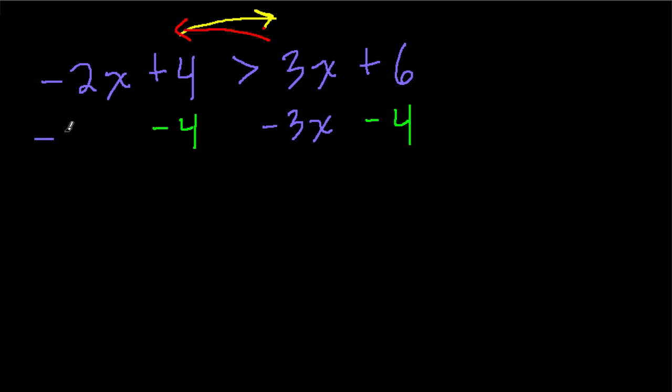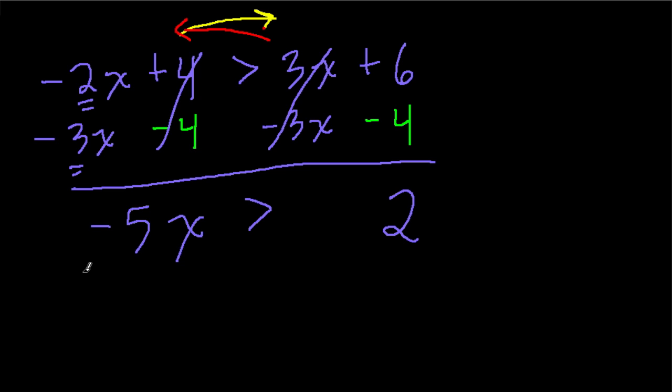So now we get 4 minus 4, that's 0. 3x minus 3x, that's 0. 6 minus 4, positive 6 plus negative 4, that's just 2. Our sign here is facing this way. Negative 2x minus 3x, you can think of negative 2 minus 3, that's negative 5x. So now negative 5x is bigger than 2. What do we do? We want to solve for x, so we're dividing both sides by negative 5. And we're dividing by a negative value, so our sign will reverse direction.